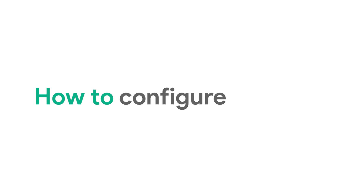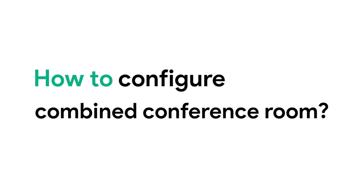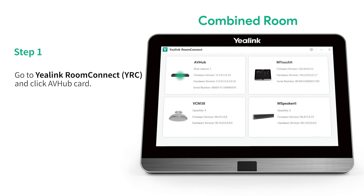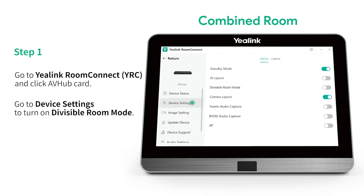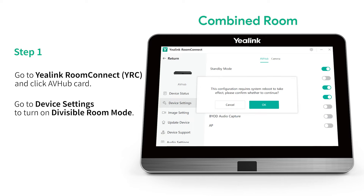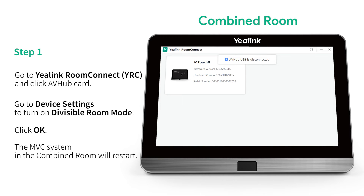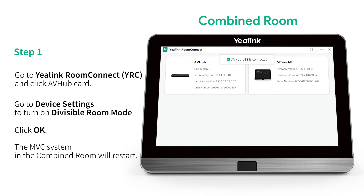How to configure a combined conference room. Step 1: Go to Yealink Room Connect and click the AV Hub Card. Go to Device Settings to turn on Divisible Room Mode. Click OK. The MVC system in the combined room will restart.